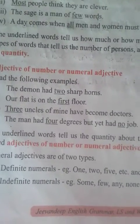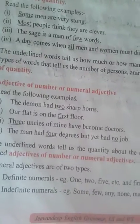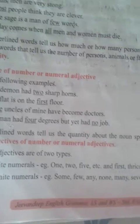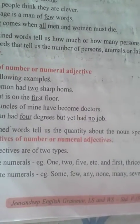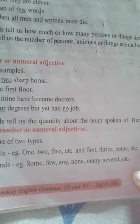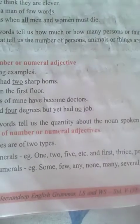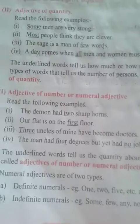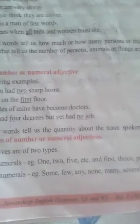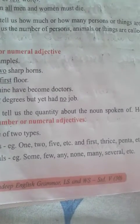Definite numerals: one, two, five, etc., and first, thrice, fourth, penta — these are called definite numbers. Indefinite numbers: some, few, any, none, many, several, etc.